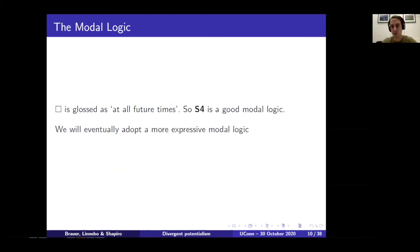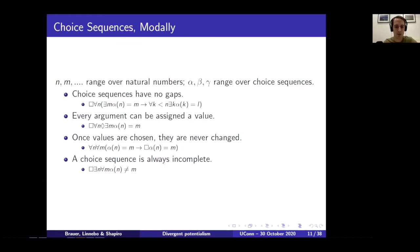What's the modal logic we want to use? We can gloss the box as meaning at all future times or every moment in the future, so S4 is going to be a good modal logic. By fiat, we can take the later-than relation to be reflexive and of course transitive, which gives us S4. We can offer a couple of postulates to start to capture this concept of a choice sequence as a mathematical object that grows in time.